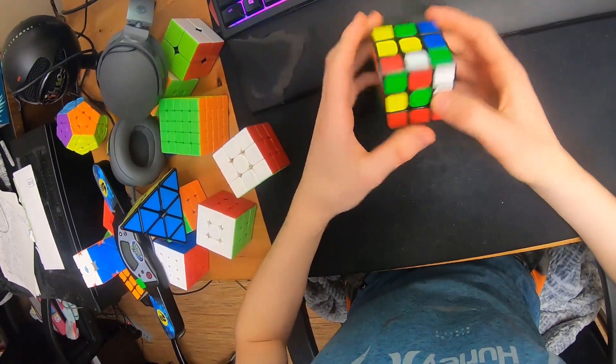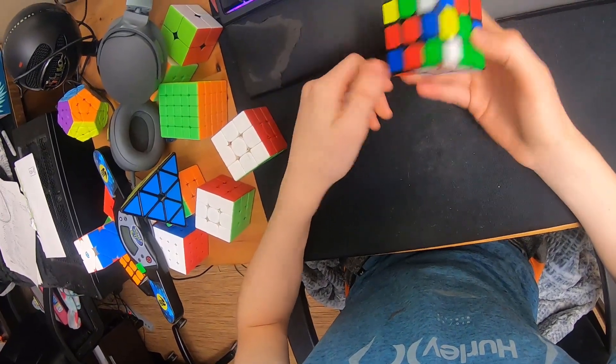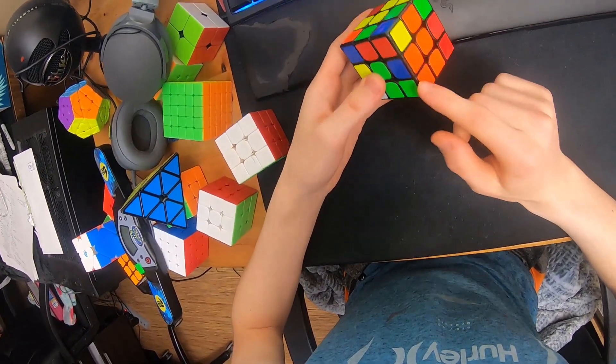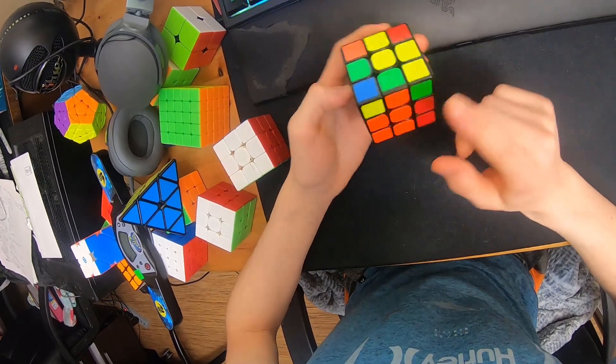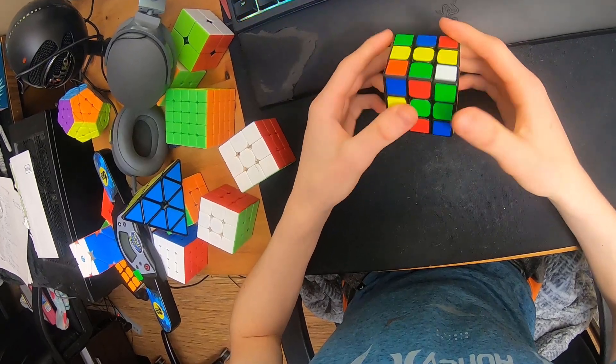Okay, last solve. So I also did white cross here, and this is a really easy start, and then I saw that this corner would be solved, and then the edges are here, so I did d and u, insert, d-prime.